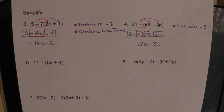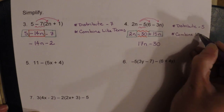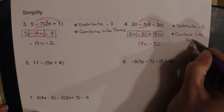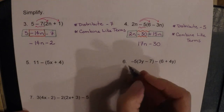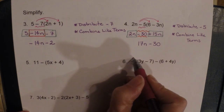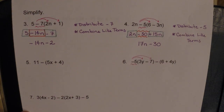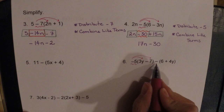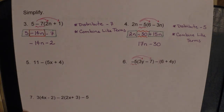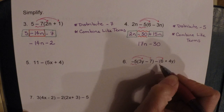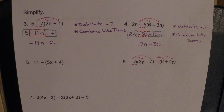Now let's look at number six. This time there are two sets of parentheses. On the first set, the negative five is distributed to both terms. On the second set, there's just a negative sign — but this is still a number outside the parentheses. There's an invisible one sitting there, so this becomes negative one times six and negative one times four y. We actually have two numbers to distribute.